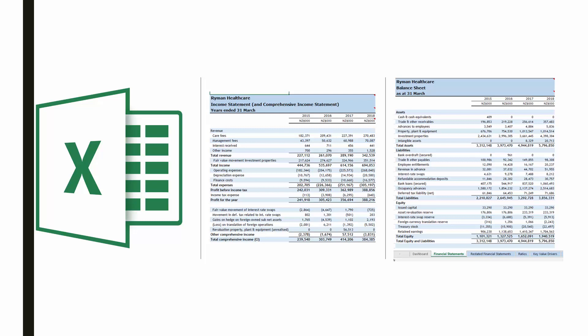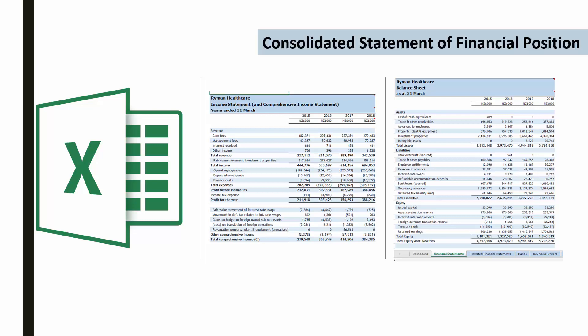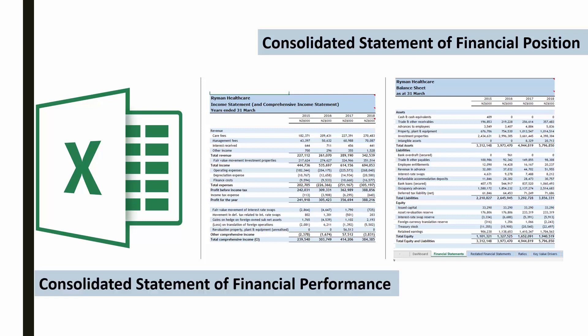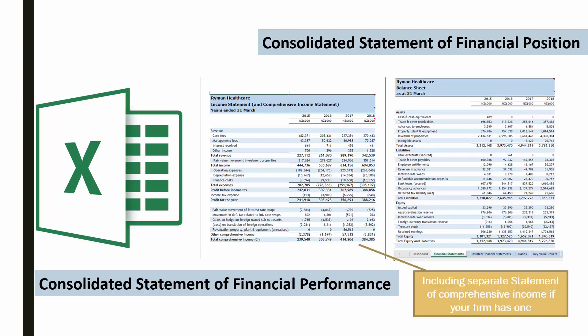Your firm's financial statements may be called a range of different names, such as consolidated statement of financial position, which is your firm's balance sheet, and consolidated statement of financial performance, which is your firm's income statement. You also may have a separate income statement and statement of comprehensive income, or alternatively a single statement of comprehensive income.